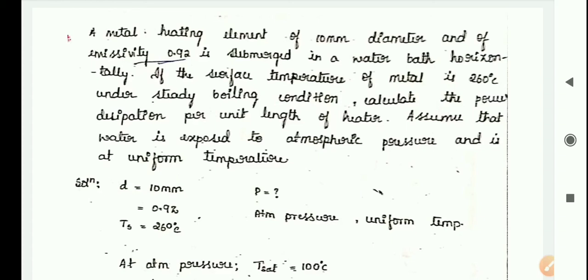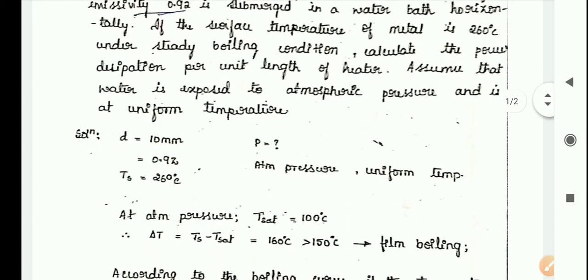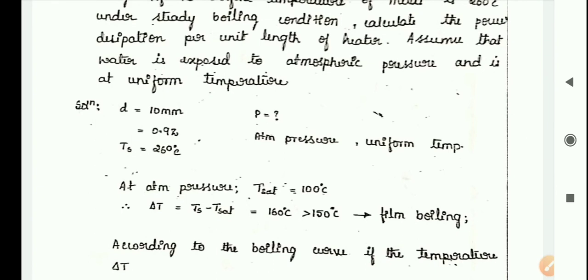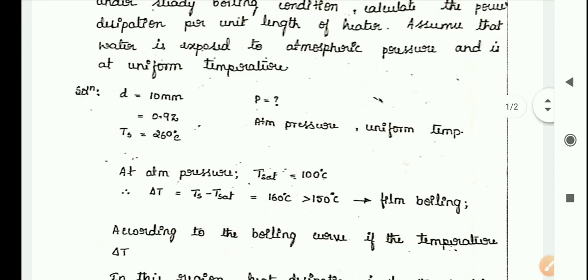Assume that the water is exposed to atmospheric pressure and is at uniform temperature. This problem is based on film boiling condition. The given parameters are: diameter is 10 mm, emissivity is 0.92, and surface temperature Ts is 260 degree Celsius.